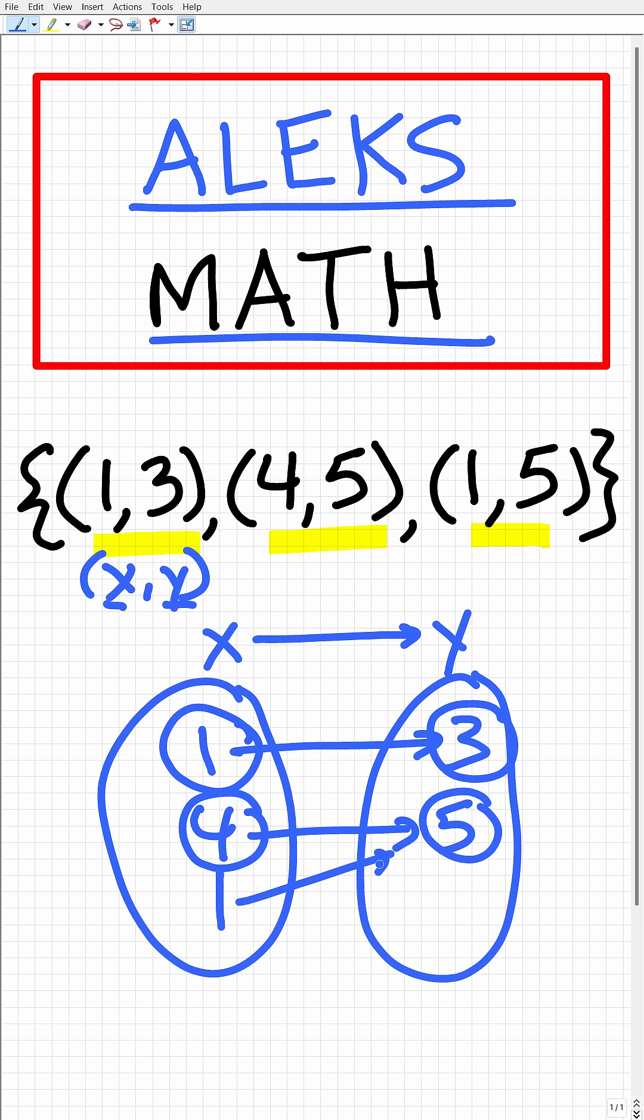Now, you might be saying to yourself, is this a problem? Well, no, this is not a problem because this one is mapping to five. We would not actually write this mapping diagram in this manner. So one maps to three, but one is also mapping to five. So the way this would look like in this mapping diagram is one is going to three and one is also going to five.